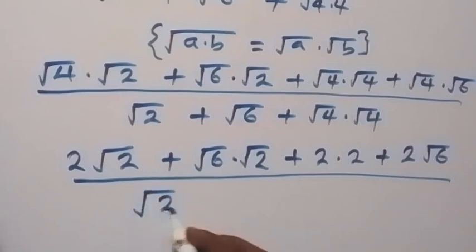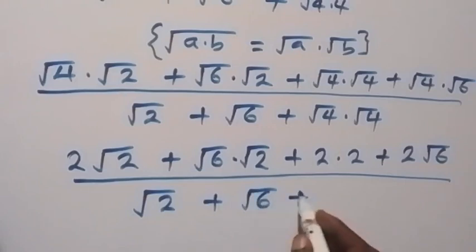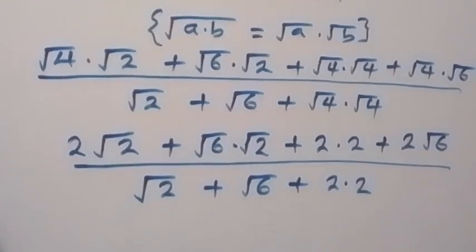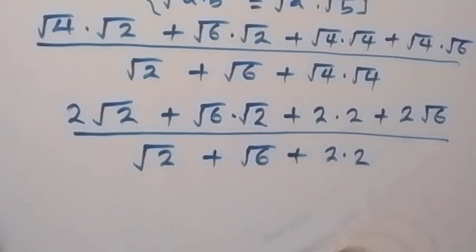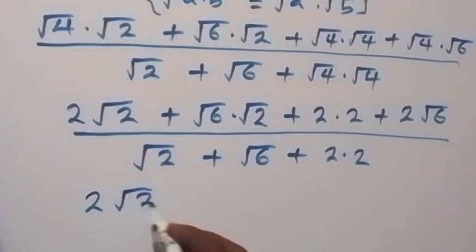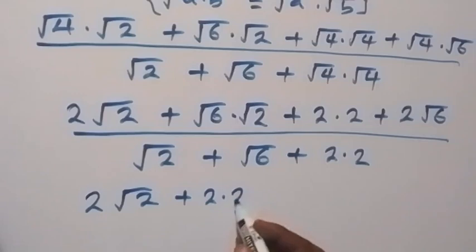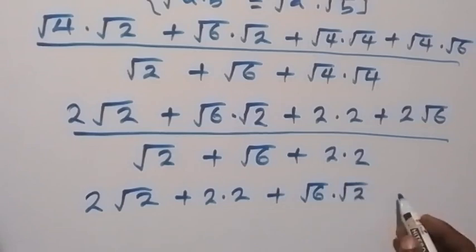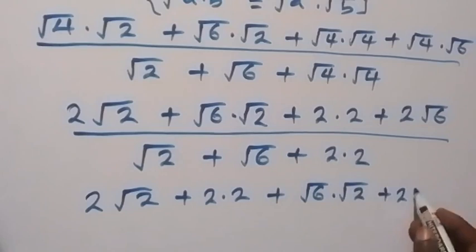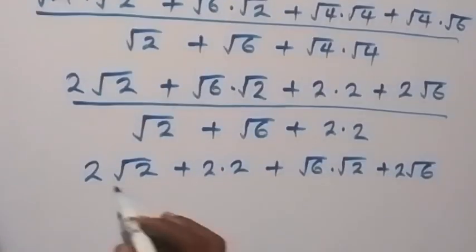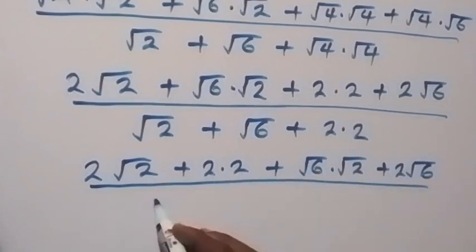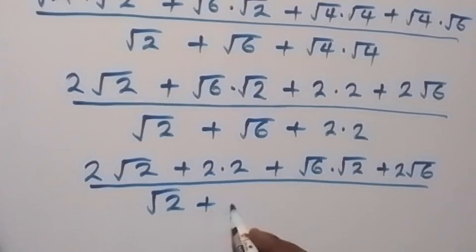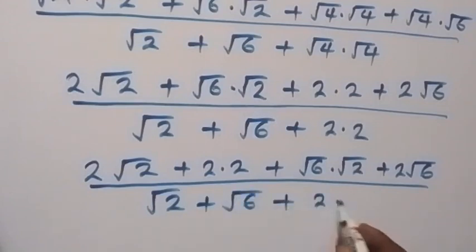In the denominator we have 2 root 2 plus root 6, then plus 2 times 2. Then in the next step let's bring the terms with root 6 together and bring the others together. So we can write this as 2 root 2 plus 2 times 2, then plus root 6 times root 2, then plus 2 root 6, divided by root 2 plus root 6 plus 2 times 2.